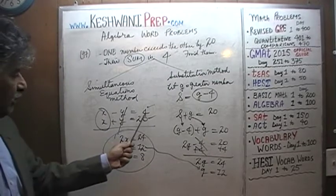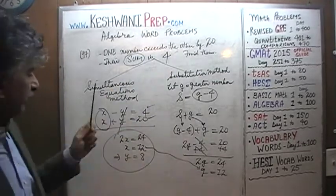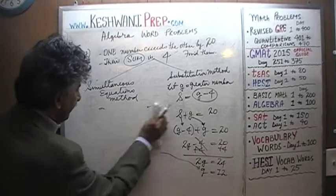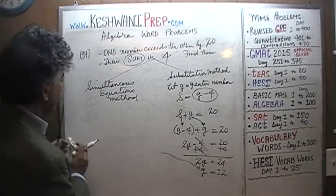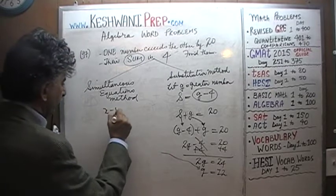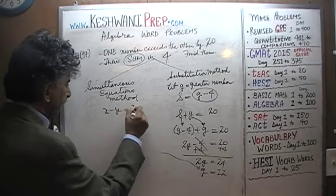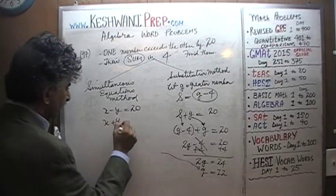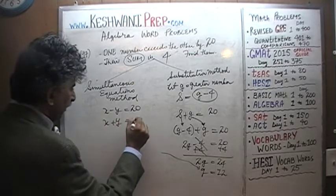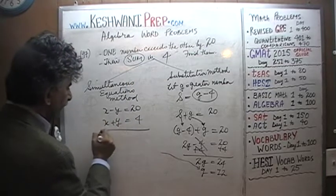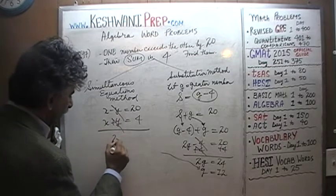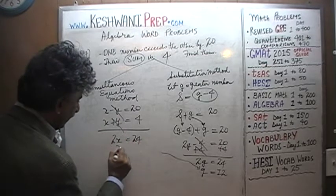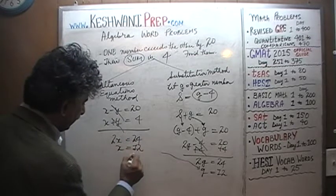We are told one number exceeds the other by 20, which means their difference is 20, so x minus y equals 20. Their sum is 4, so x plus y equals 4. Let's add them up — the y's drop out, and 2x equals 24, so x equals 12.